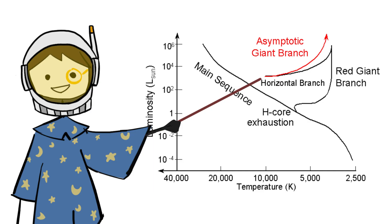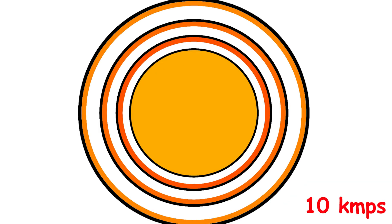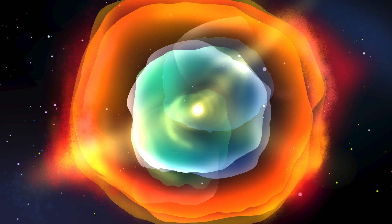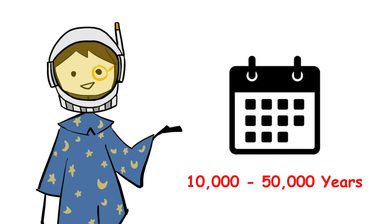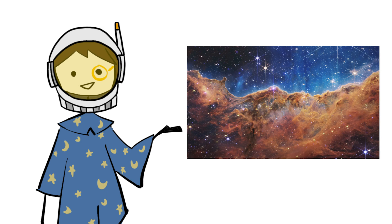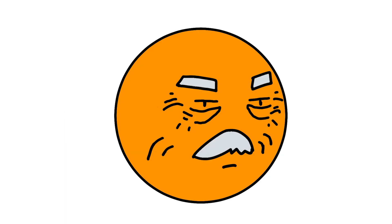Out of the chaos of the AGB phase, the planetary nebula emerges. The Sun expels its outer layers in a series of shells that expand at tens of kilometers per second. These shells are ionized by intense ultraviolet radiation from the now-exposed core, causing them to glow in brilliant colors. The period of the planetary nebula lasts only 10,000 to 50,000 years, a brief moment in cosmic time. The nebula expands to light-year scales before dispersing into the interstellar medium. The ejected material will eventually be incorporated into new generations of stars and planets.